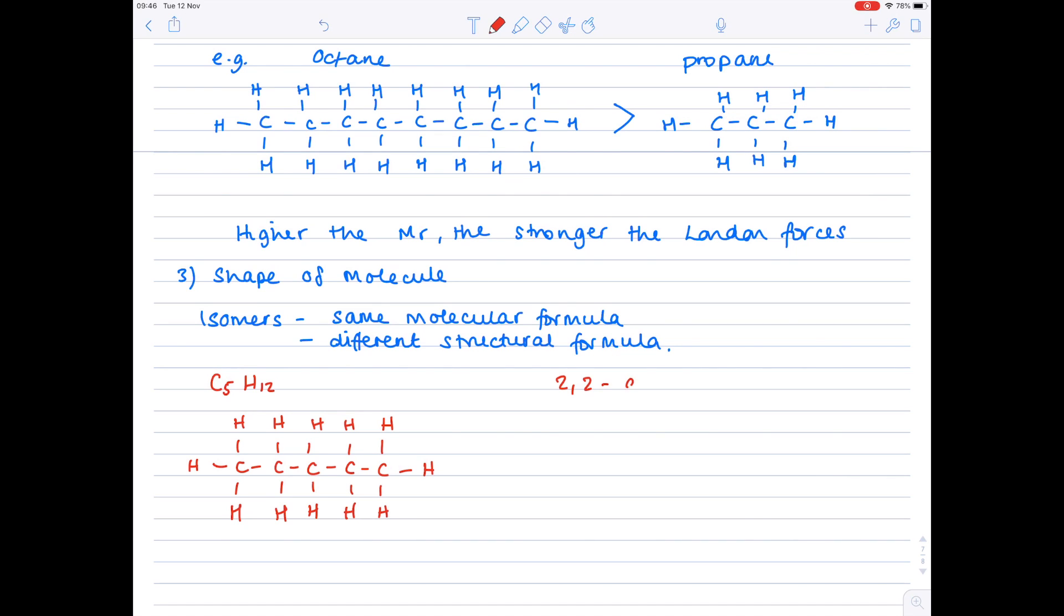And then I draw an isomer of it, which is 2,2-dimethylpropane. We'll start by drawing the longest part of the chain first of all, which is the propane end. So, that's obviously three carbons. The methyl group tells you that you have a CH3 group. There's two of them, the dye part of the name, and these both occur on the second carbon. So, that's up here.